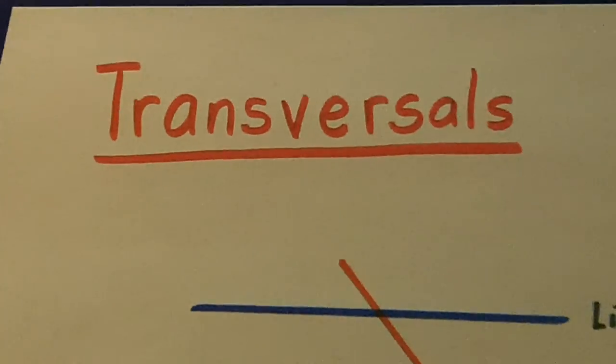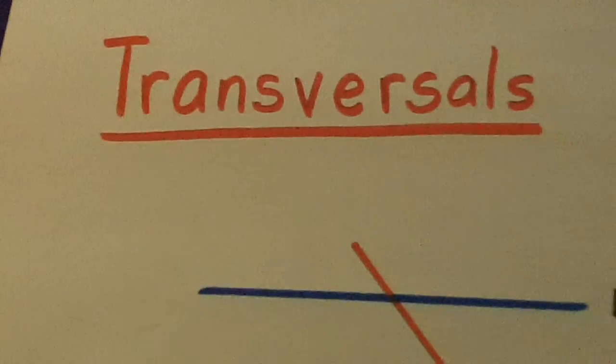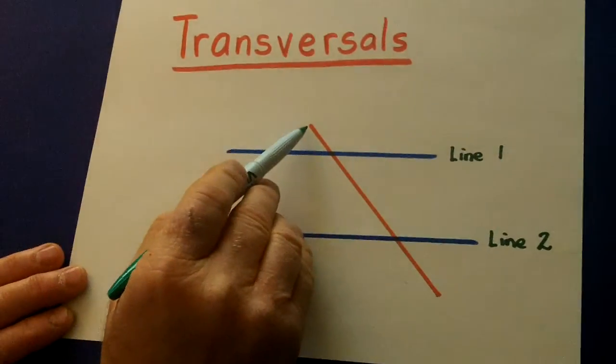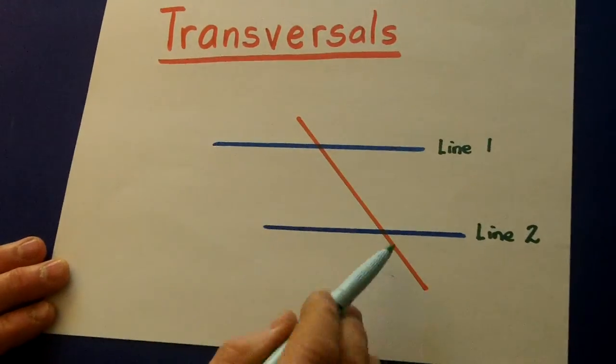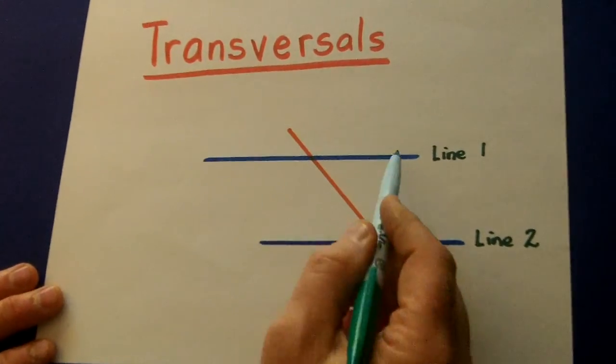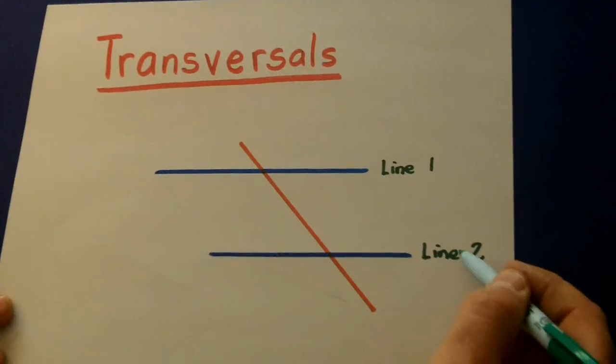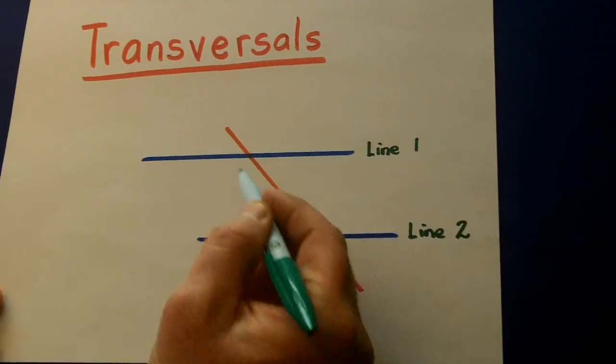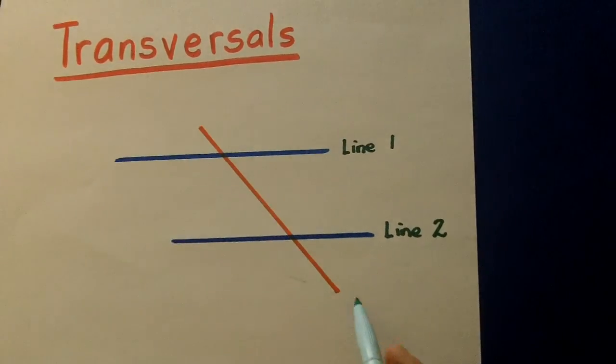Transversals. Transversals is when one line, this red line, crosses two parallel lines. So line one is parallel to line two, and then the transversal is the red line.